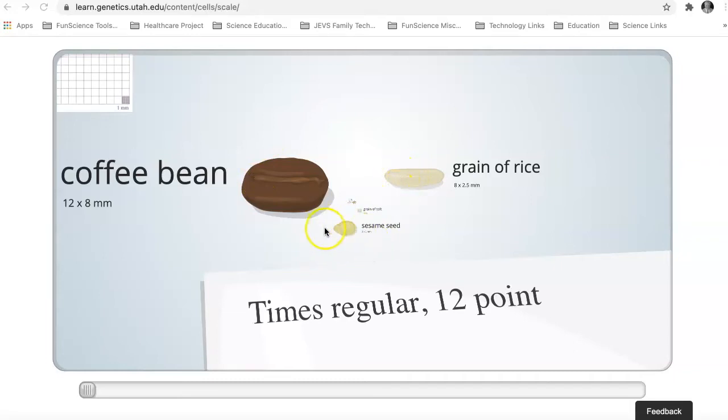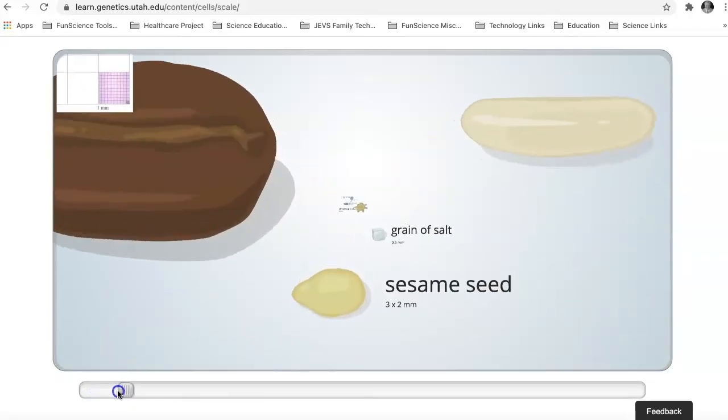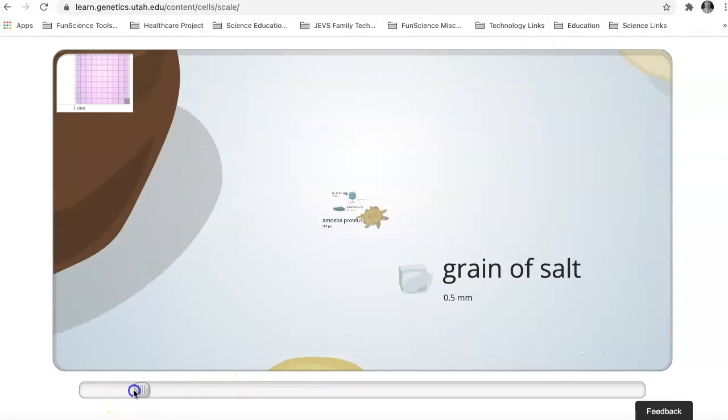So what we're going to do is we're going to take the slider down here, and we're going to start moving it. And we start zooming in very, very slowly. There's our sesame seed, which is about three by two millimeters. There's a grain of salt, which is less than a half millimeter. But look what's happening to our scale up here.